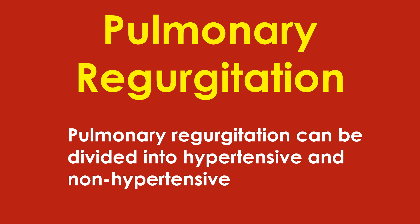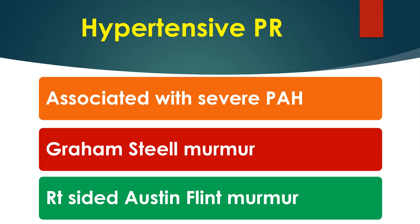Pulmonary regurgitation (PR) can be divided into hypertensive and non-hypertensive. The former is associated with pulmonary arterial hypertension while the latter is not. Hypertensive PR is associated with severe pulmonary hypertension and produces a blowing decrescendo early diastolic murmur with the eponym Graham Steele murmur.